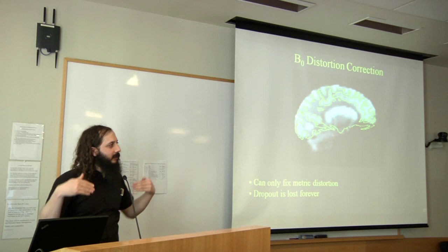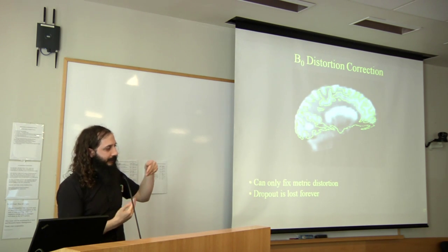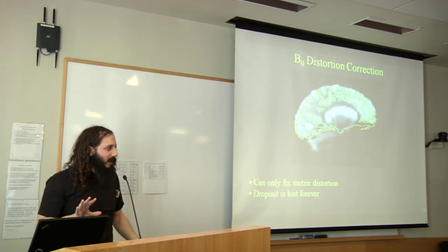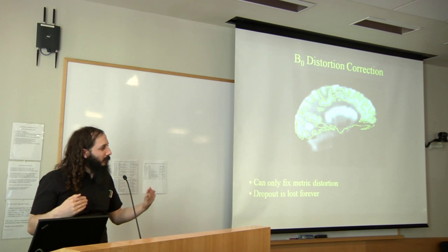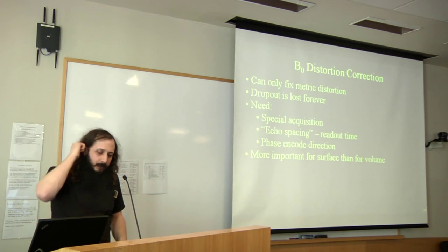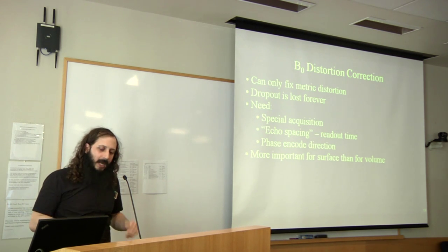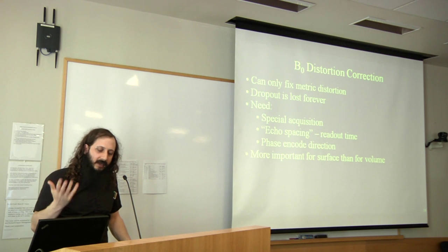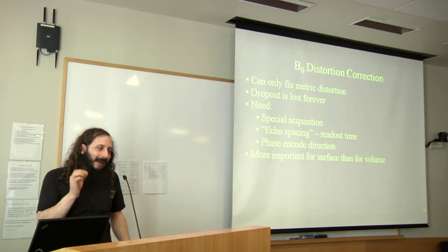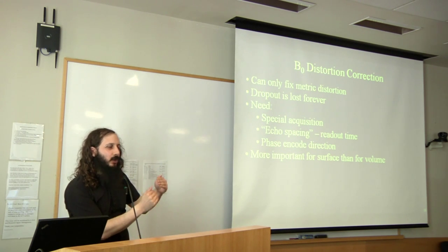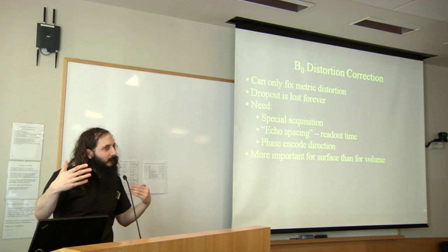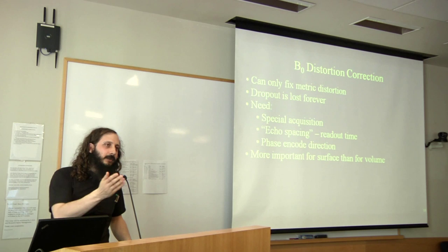Not only do susceptibility gradients cause distortion, they can also cause signal dropout because a strong magnetic field gradient along the slice direction causes dephasing, leading to signal dropout in gradient echo images. This signal dropout is lost forever — there's no correction for it. The only remedy is proper shimming and really thin slices. So B0 distortion causes both geometric distortion and dropout through the slice direction. Correction can only fix geometric distortion; the dropout is lost. To perform this correction we need a B0 field map acquisition, and we also need to know the echo spacing of the EPI acquisition — roughly the time between each k-space baseline — which quantifies how slow the encoding process is. The slower the encoding, the more vulnerable EPI is to distortion.